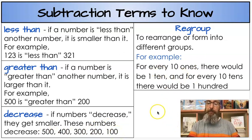Next is regroup. When you regroup you rearrange or form into different groups. For example for every 10 ones there'd be 1 ten. And if you go backwards for every 10 there'd be 10 ones. Same thing for every 10 tens there'd be 100. And for every 100 there'd be 10 tens. You need to know that to solve a lot of our subtraction questions.